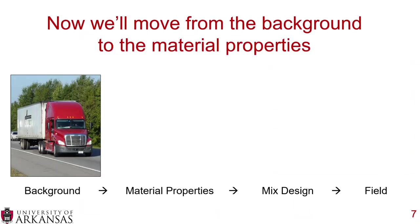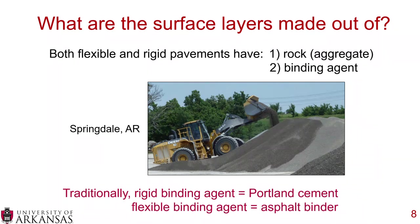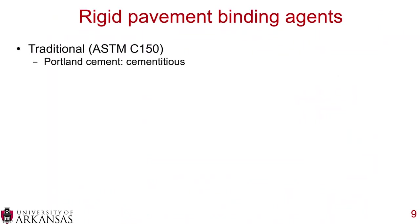Moving on to material properties, both flexible and rigid pavements contain aggregate — rock — and some sort of binding agent. Traditionally, the binding agent for rigid pavements is Portland cement, hence Portland cement concrete. The binding agent for flexible pavements is asphalt binder. However, that's not quite the whole story.